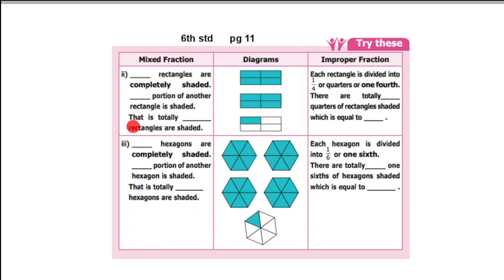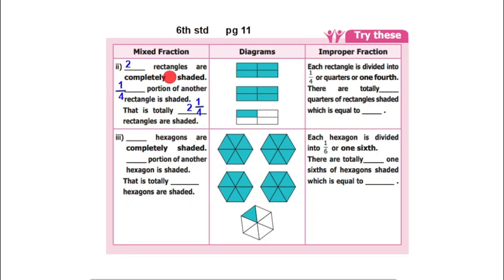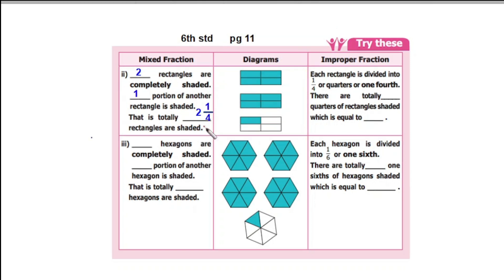So totally, the shaded rectangles form a mixed fraction. How many portions are shaded in the mixed fraction? Two rectangles are completely shaded, and one by four portion of another rectangle is shaded. So one by four portion of the third rectangle is shaded. This is a mixed fraction: 2 and 1 by 4. That is the mixed fraction.